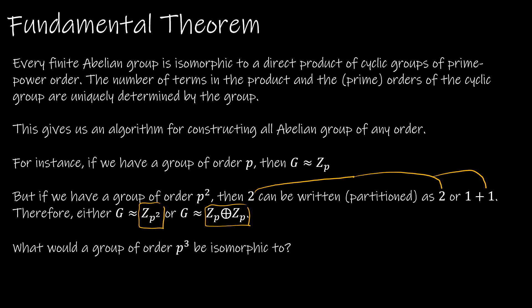For instance, if I had a group of order three, that group has to be isomorphic to Z three. But if I had a group of order nine, which is three squared, that's isomorphic to either Z nine, or Z three cross Z three as an external direct product.